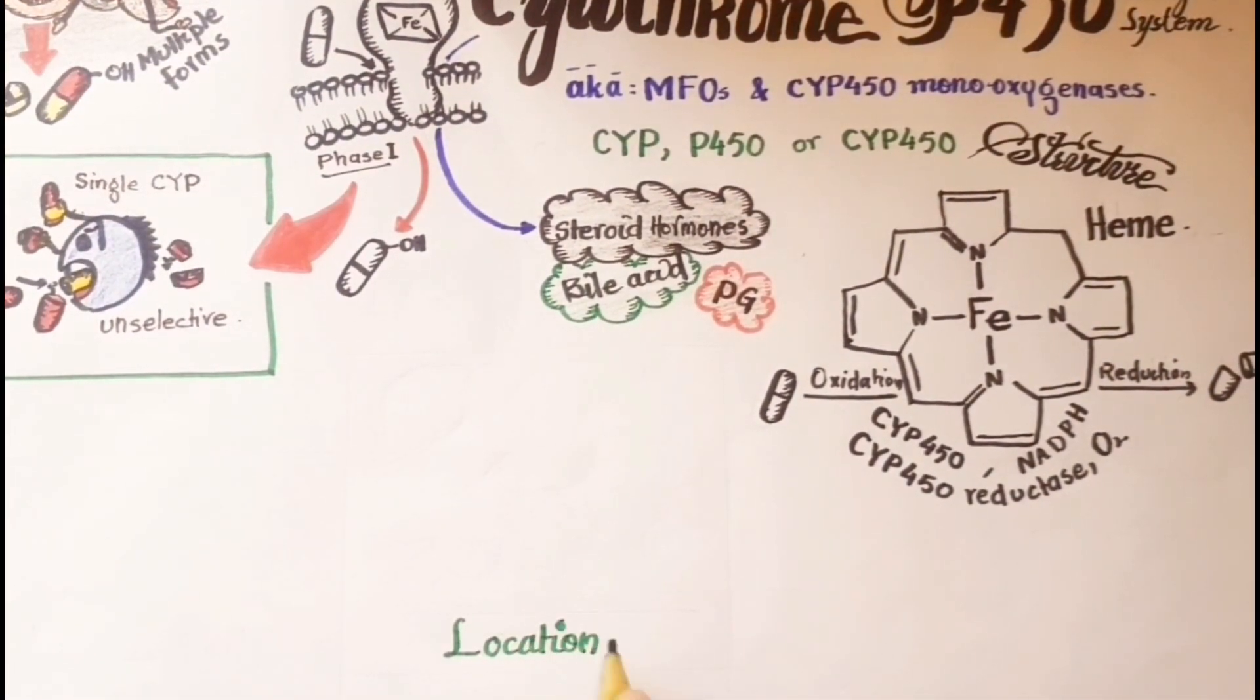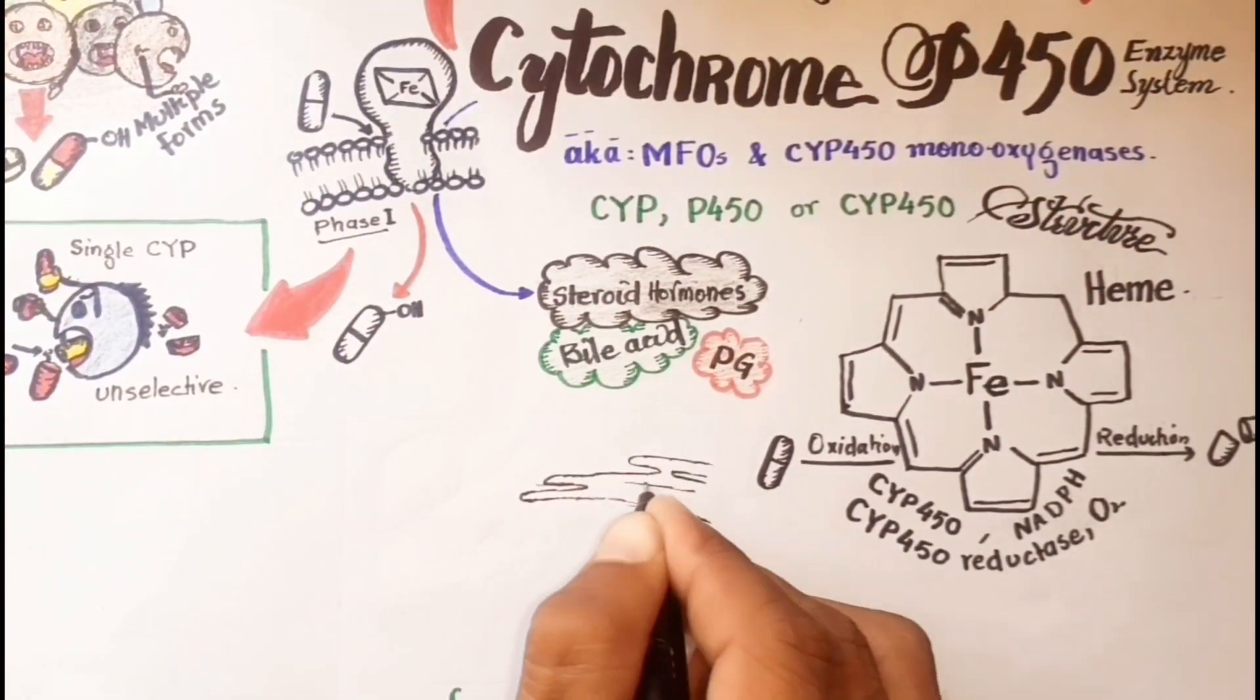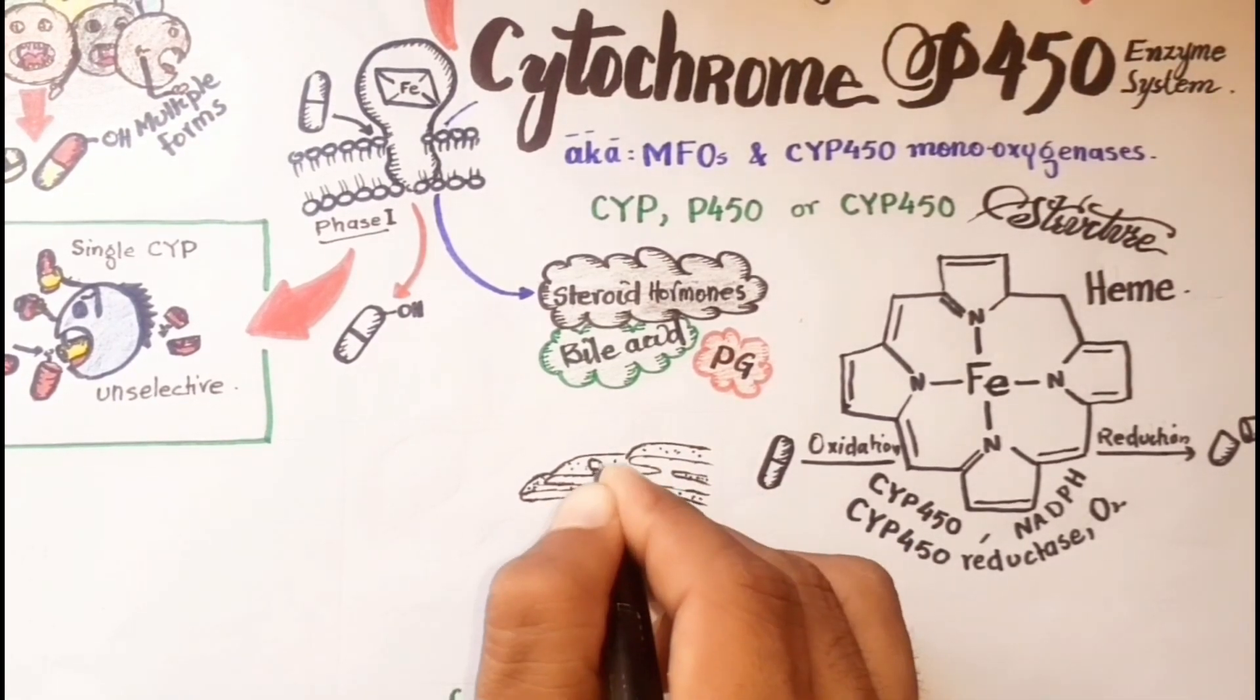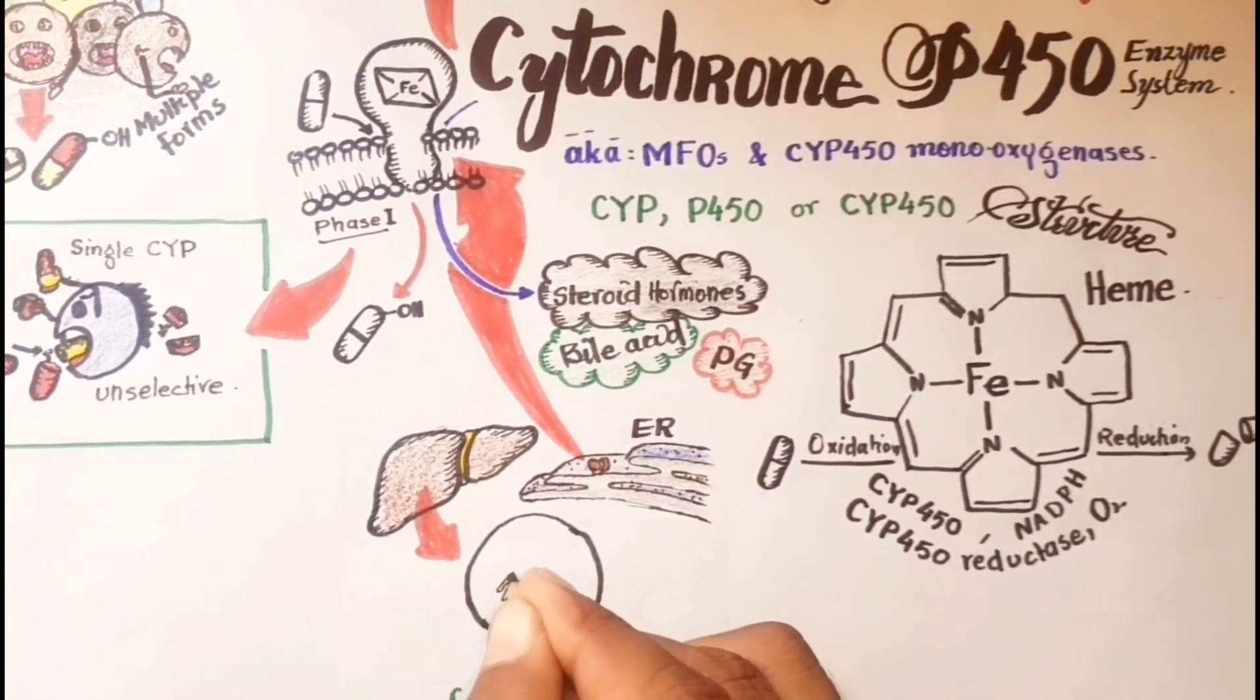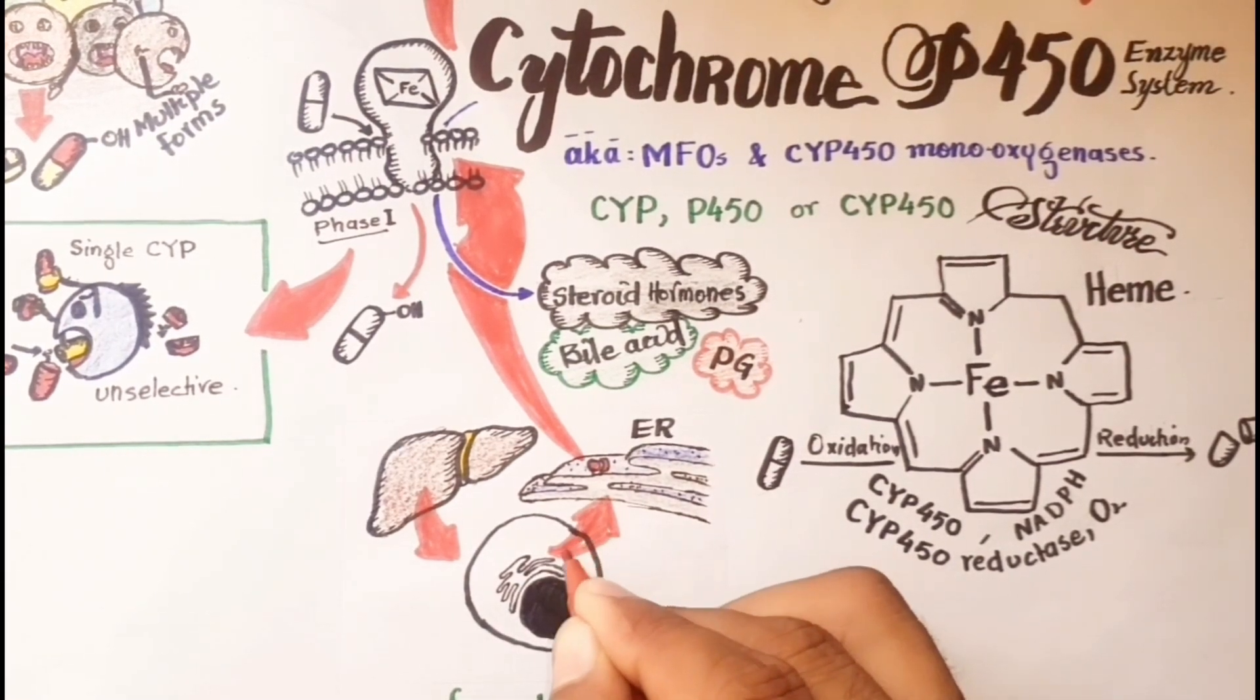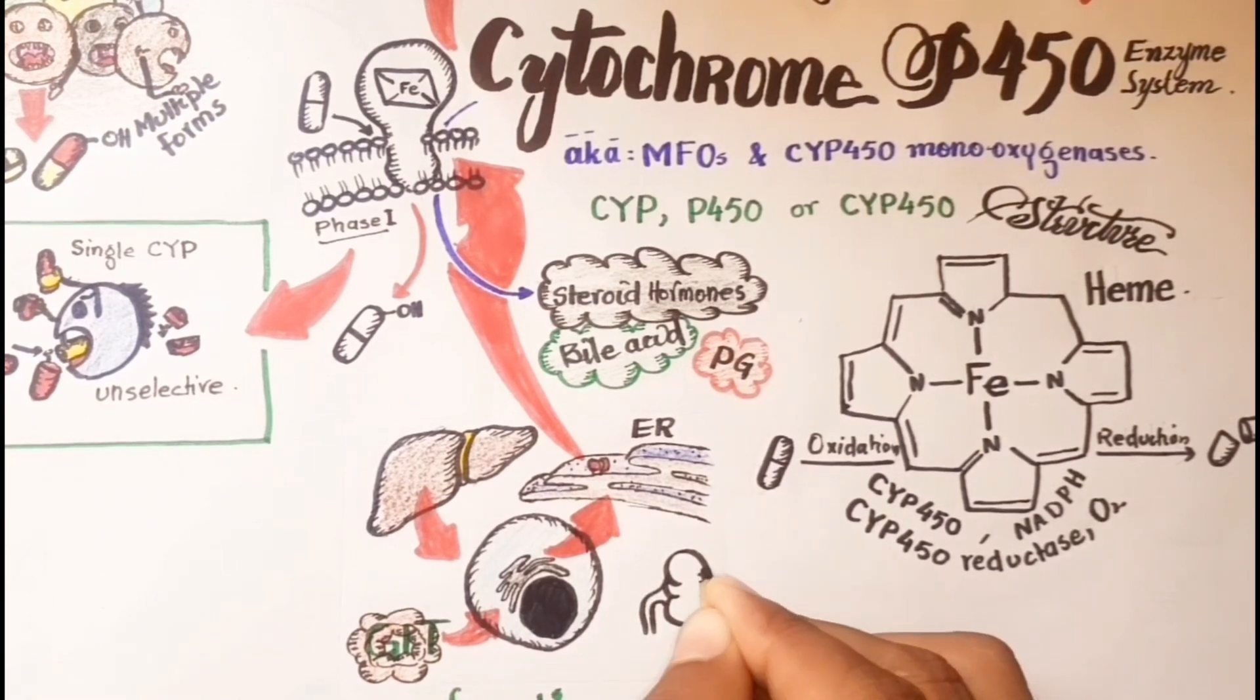Many drug metabolizing enzymes are located in the lipophilic endoplasmic reticulum membranes of the hepatic cells, which has the greatest specific enzymatic activity. They are also found in other sites like GIT and kidneys.